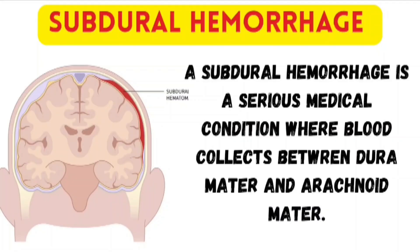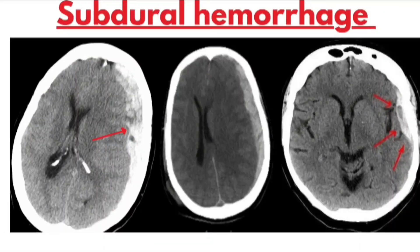Subdural hemorrhage, also known as subdural hematoma or SDH, is a serious condition where blood collects between the dura mater and the arachnoid mater. This bleeding usually occurs due to tearing of bridging veins, often after trauma. On CT scan, the red arrow points to a crescent-shaped hyperdense area along the surface of the brain. Unlike epidural hematomas which are lens-shaped, subdural hematomas spread more diffusely and can cross suture lines. A midline shift may also be visible, indicating pressure on the brain.